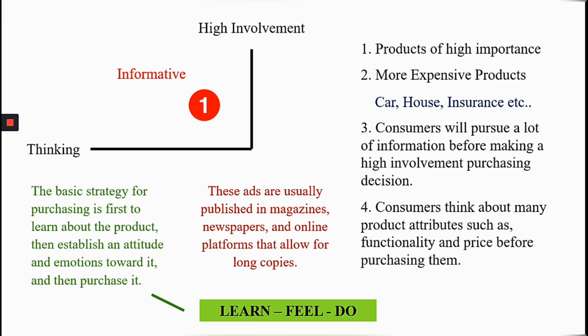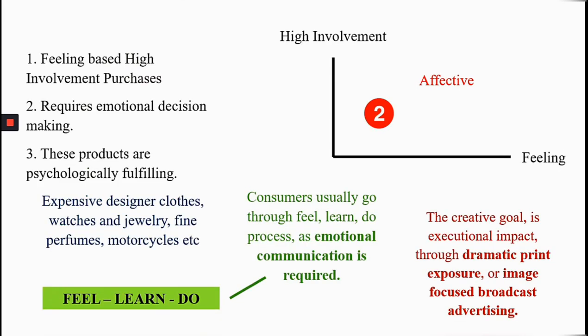The second quadrant is about high involvement products versus the feeling toward them — feeling-based high involvement purchases. Products such as expensive designer clothes, expensive watches, jewelry, fine perfumes, and motorcycles fall here. All of these products are psychologically fulfilling. When you buy products like these, they give you a societal status and a satisfaction that is psychological in nature.